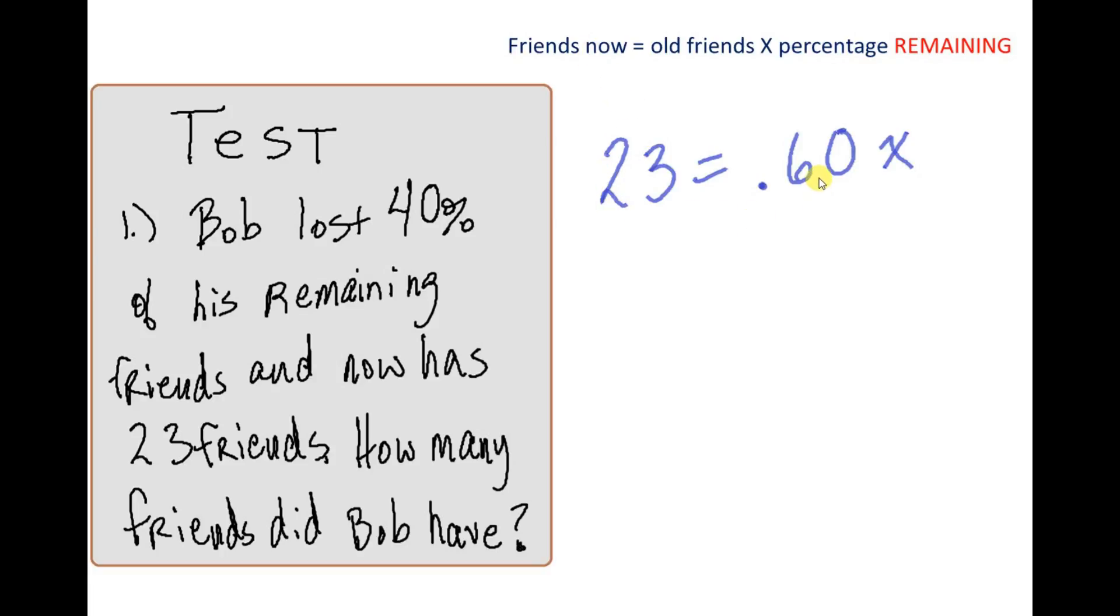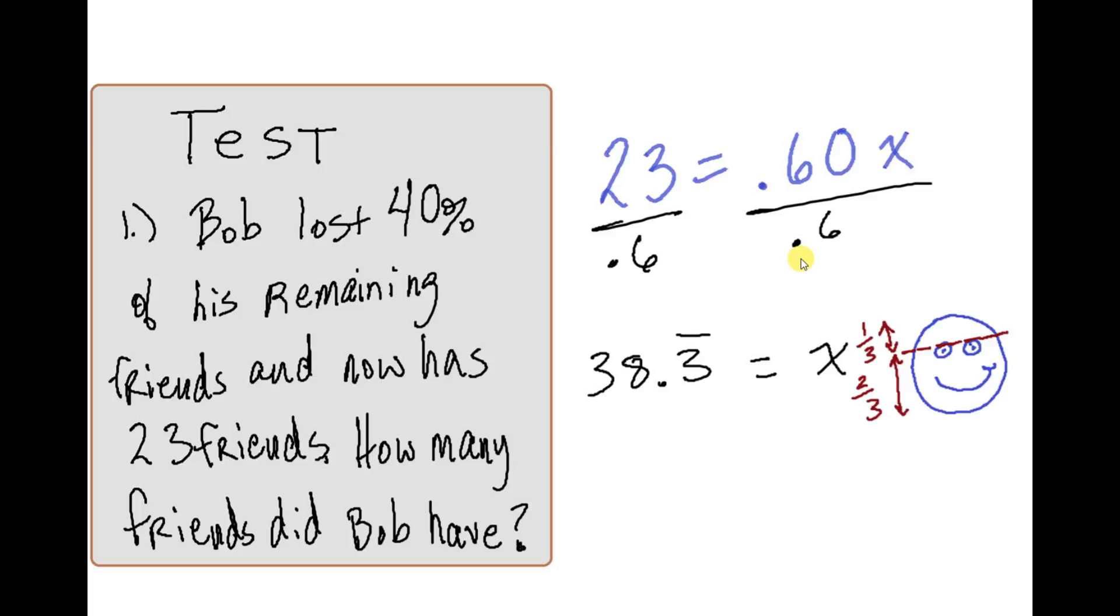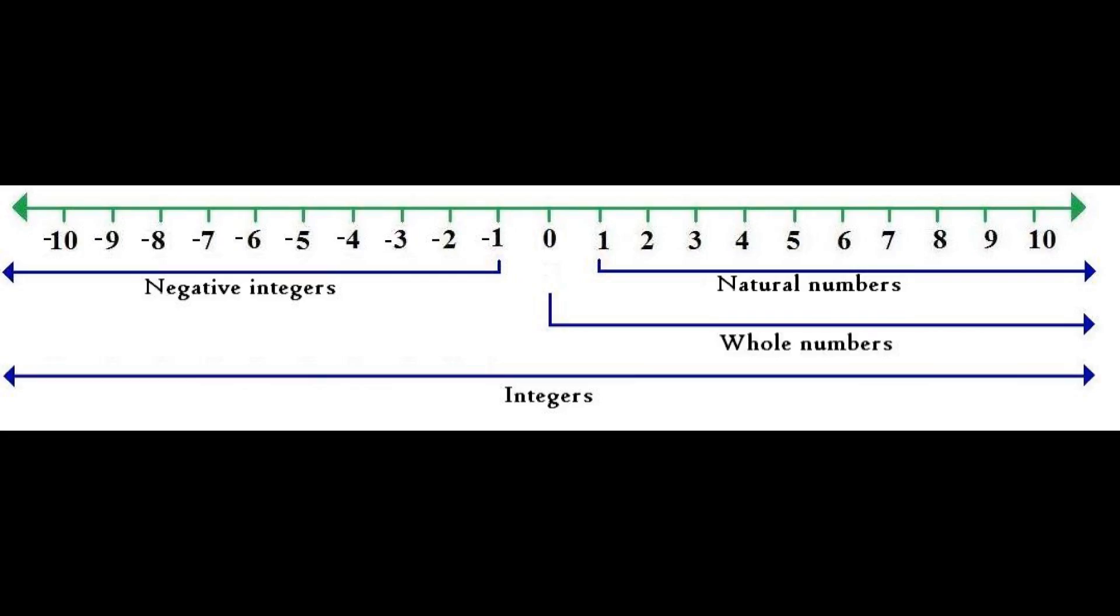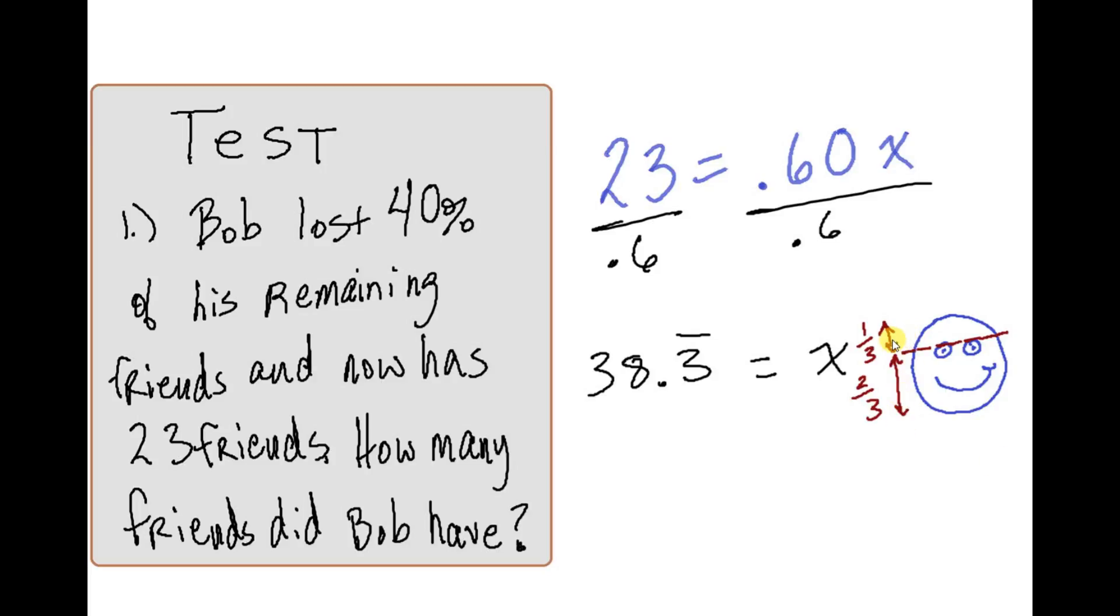So let's go ahead and write our equation. The friends that he has now are 23. He has 60% of what he used to have. So this is the equation: 23 = 0.60x. He has 23 friends now, and that is 60% of what he used to have. He lost 40, so he kept 60. To solve this, it's just some basic inverse operations. 60% is multiplying by x, so the inverse is to divide. You use your handy-dandy calculator, you get 38.3 repeating. So you have to round this because we're talking about number of friends. You can't have a third of a friend because there would be nothing left. So you'd have 38 friends. He used to have 38 friends.